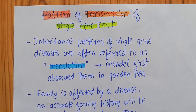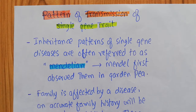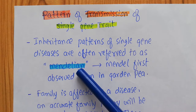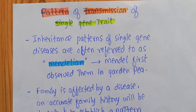Bismillahirrahmanirrahim, and welcome back to this next video. This is the second video on the pattern of transmission of the single gene trait. In the last video I told you that the pattern of transmission of single gene traits are also known as Mendelian, because Mendel for the first time observed them in the pea plant.